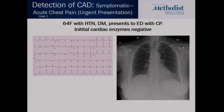To get this conversation going, here's a case: a 64-year-old with hypertension and diabetes. So it has the typical age and risk factors, presents to your emergency room with chest pain. Initial cardiac enzymes are negative, and the initial information you have is a baseline EKG and usually a chest X-ray as well. This is kind of the setup for this talk.